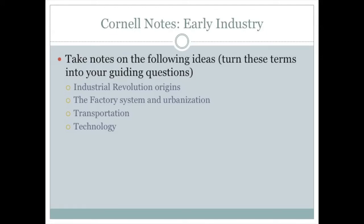Good evening students. Today we will be discussing the early industry in the United States. Please take notes on the following items and turn them into your guiding questions for Cornell notes: Industrial Revolution's origins, the factory system and urbanization, and transportation and technology. These will be the items we focus on during the lecture.